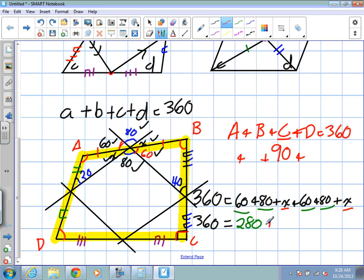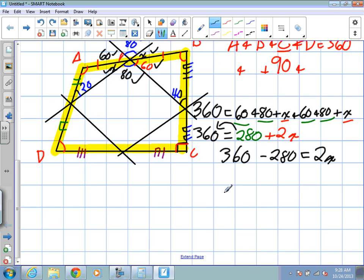So I'm going to move my 280 to the other side because I want to isolate for X to figure out what that angle is because that's going to help us with this triangle over here. So we get 360 minus 280. When I move 280 over, it becomes a negative. Is equal to 2X. What's 360 minus 280? 80. Great. 80 is equal to 2X. And how do we isolate X? That's right. When it comes over, it's divided by 2. So what is X in the end? 40.